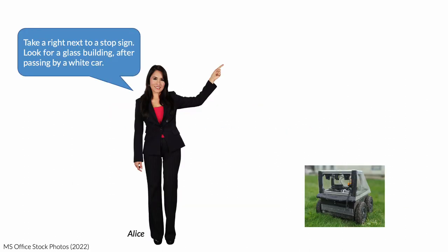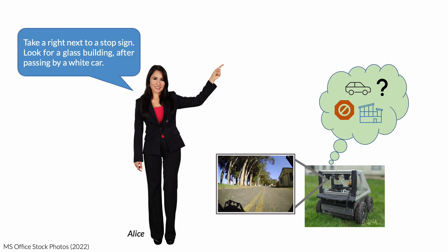We consider the task of navigational instruction following from high-level natural language commands, such as these directions to the office given by Alice, and egocentric visual observations available to the robot. Our system can parse such free-form instructions by grounding them into its past knowledge of the environment using pre-trained models of language, vision, and control.